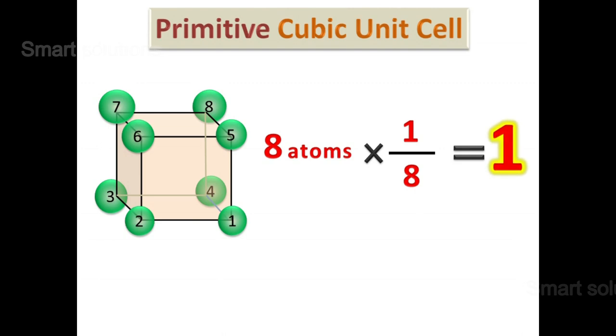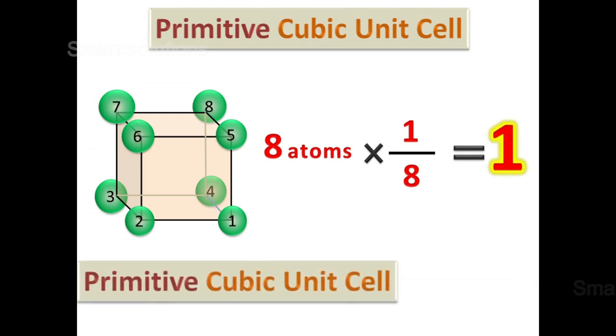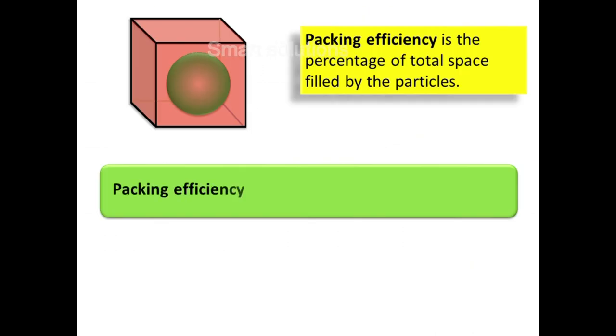We know that in primitive cubic unit cell, the number of atoms in a unit cell is equal to one atom. Packing efficiency is equal to volume of atoms